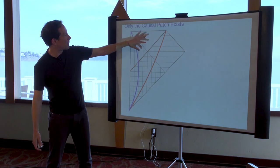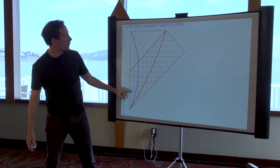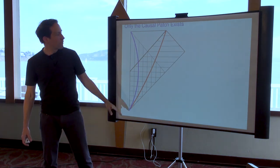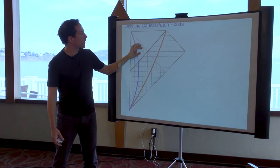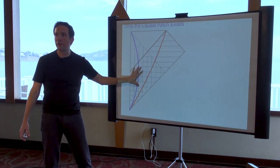Here's another example. This would be a black hole. You can fall into the black hole. You can decide to stay outside. Those two observers really see different parts of the universe. Nobody sees all of this universe.